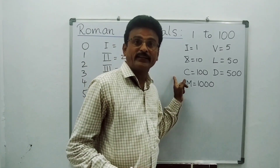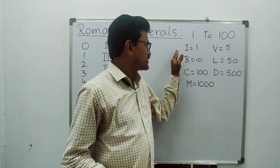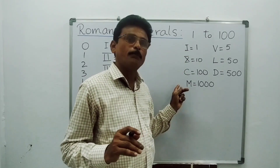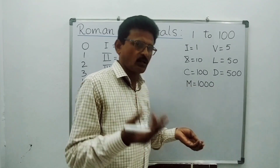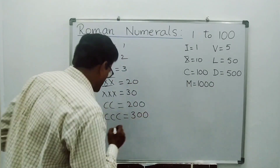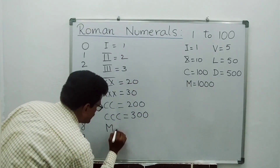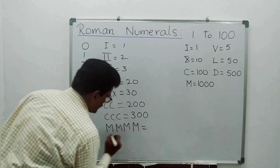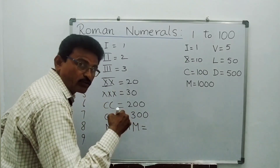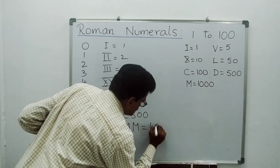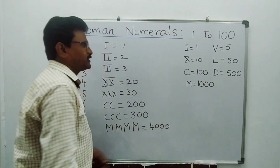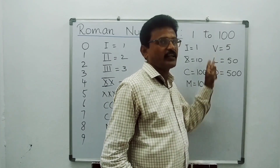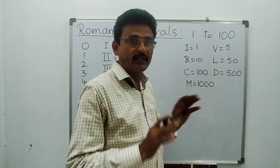Only 3 times maximum you can repeat these numerals. But M can be repeated more number of times — for example, MMMM is 1000+1000+1000+1000 = 4000. Remember: V, L, and D are never repeated.